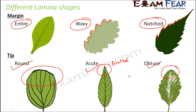By looking at the leaf, you can decide what kind of tip it has and what kind of margin it has. Different plants will have different types of leaves with a variety of shapes and sizes. Even the colors vary — though mostly leaves are green, the shades of green also vary, from light green to dark green.